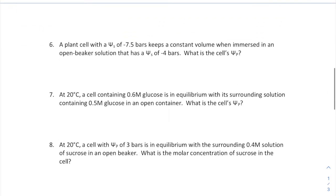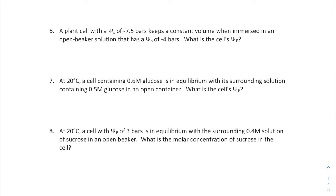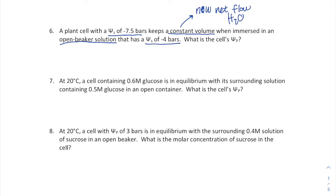Question six: we're given a plant cell's solute potential and the solute potential of an open beaker solution, and told there is a constant volume. Constant volume means no net flow of water — equilibrium. Even at equilibrium, water moves in and out at equal rates. I need to find the cell's pressure potential given its solute potential.